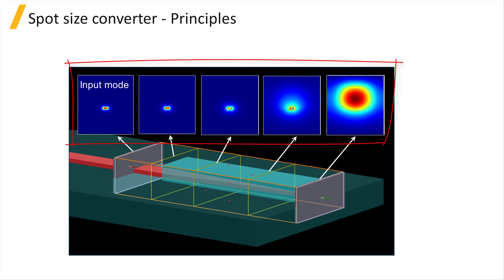The images here show the amplitude of the electric field from monitors placed at various locations in the propagation direction. You can clearly see that the spot size becomes larger as it propagates.